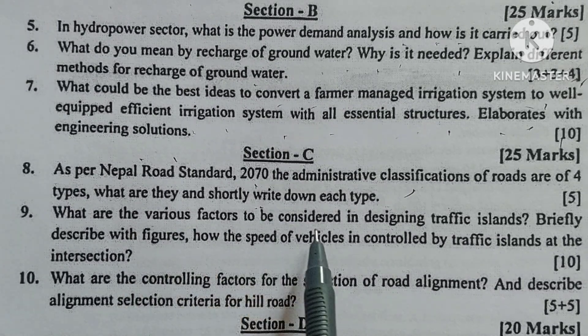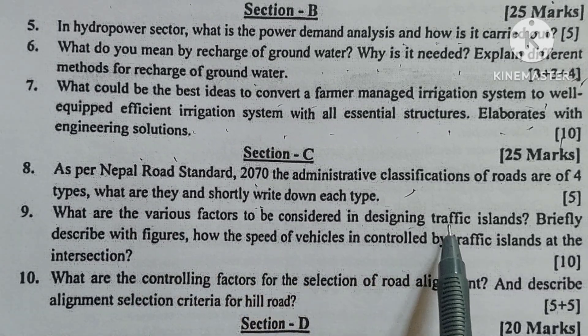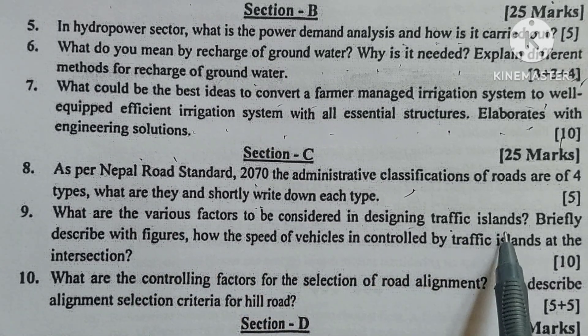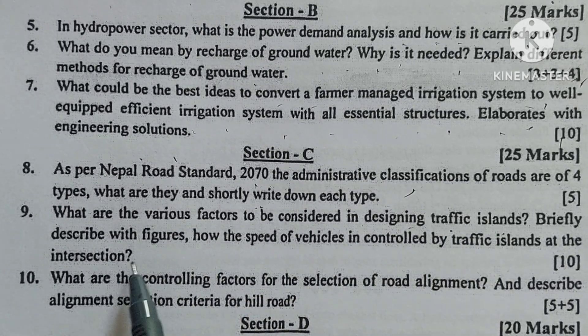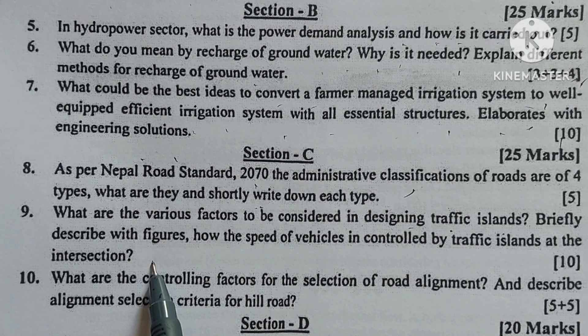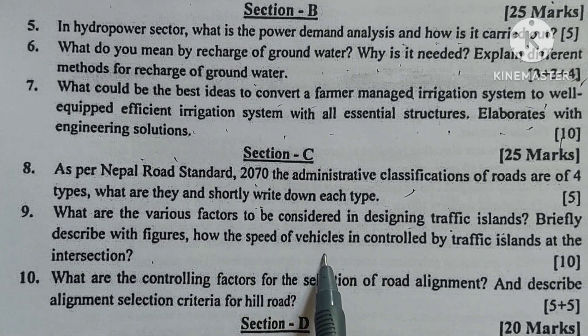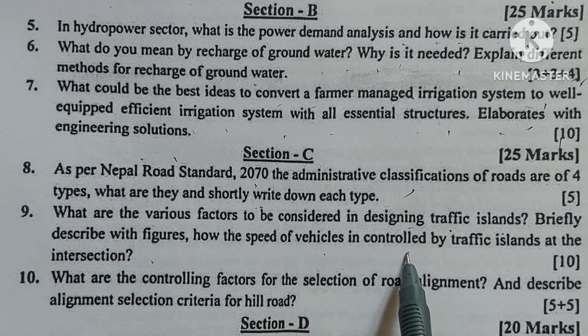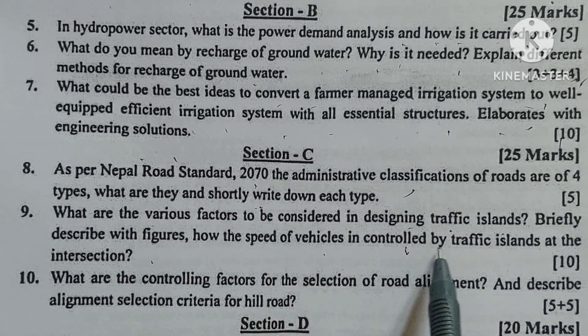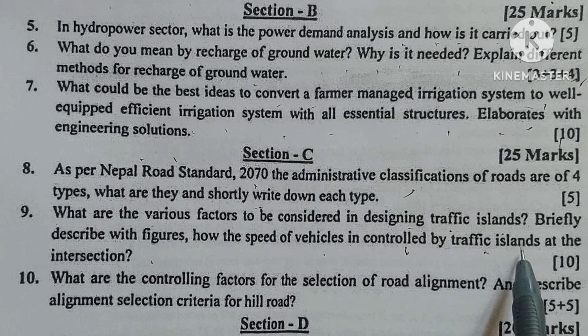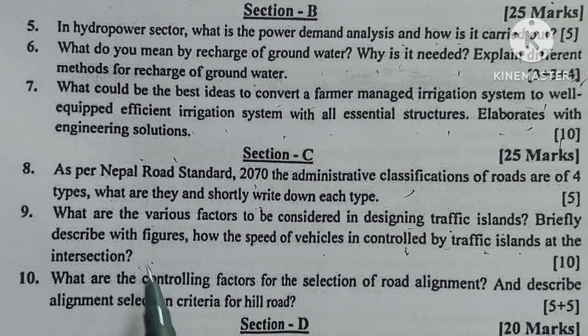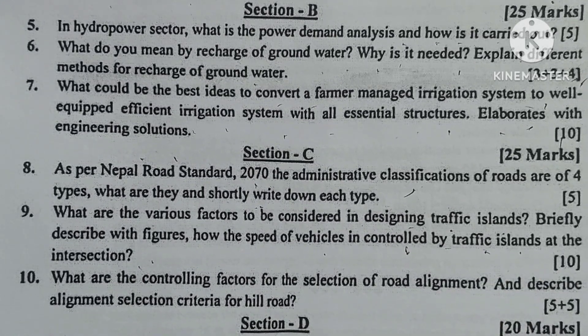What are the various factors to be considered in designing traffic rotaries? Briefly describe with figures how the speed of vehicles is controlled by a traffic island at the intersection.